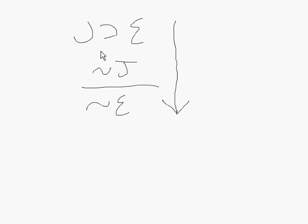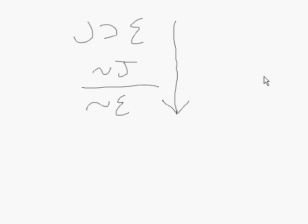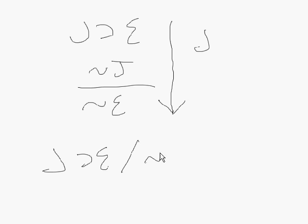Here we're going to change the structure and write it horizontally — J therefore E, slash not J, therefore not E. We're going to write arguments horizontally in which each premise is separated by a slash.